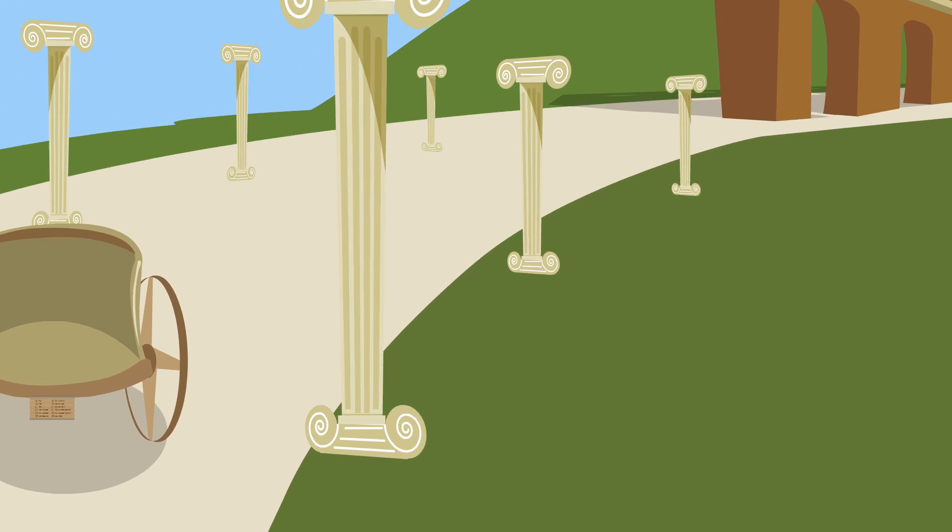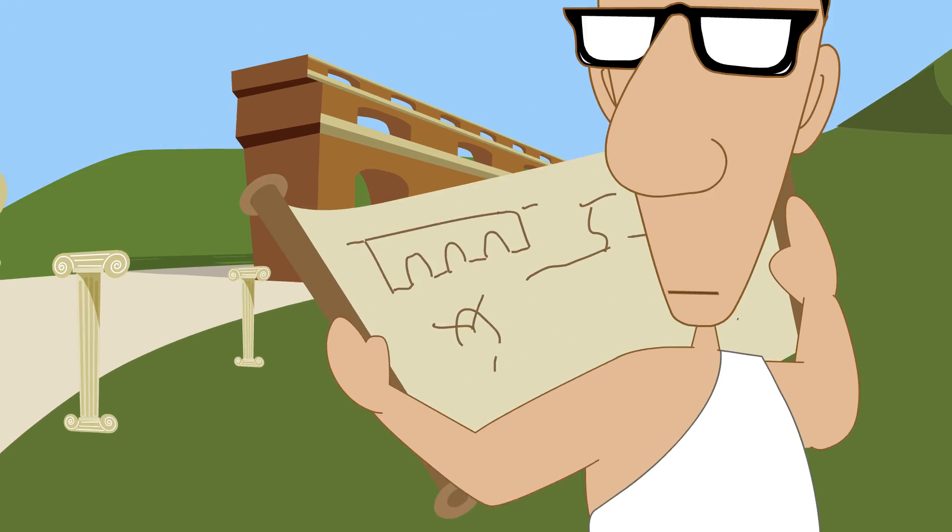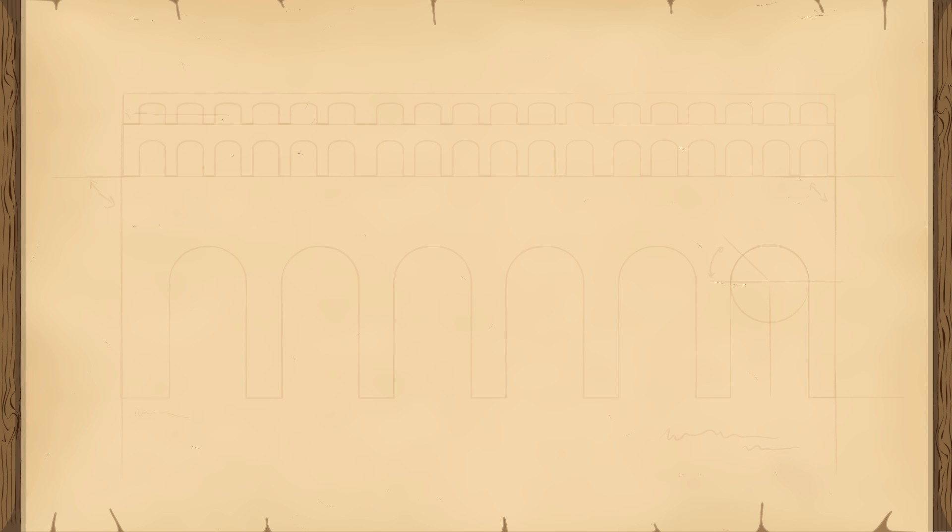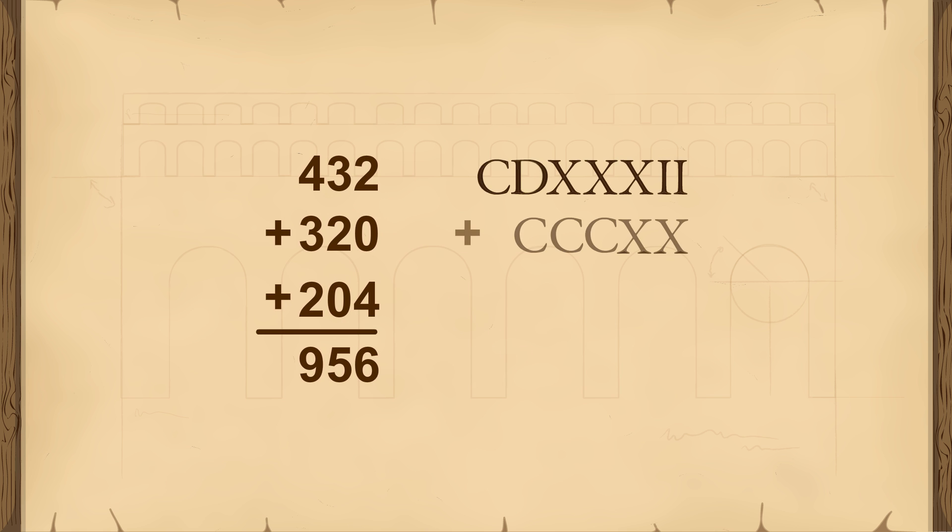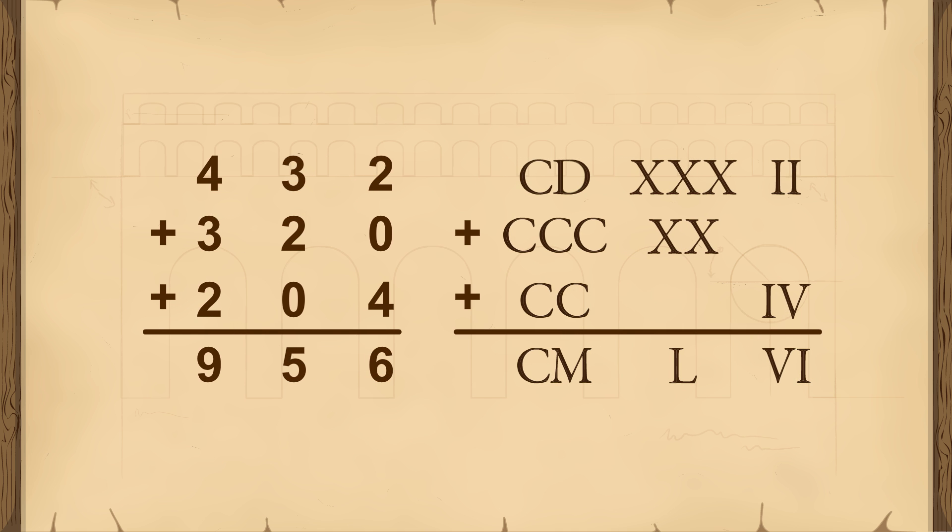At first look, it seems like it would be very difficult to do calculations using Roman numerals. For instance, take the following simple addition problem. Using Roman numerals, this same problem looks quite complicated. However, the Roman number system is actually not all that different from ours if you think of groups of Roman symbols being the equivalent to our single numeric symbols. If we arrange the symbols into columns of 1s, 10s, and 100s, the two number systems look a little more similar.